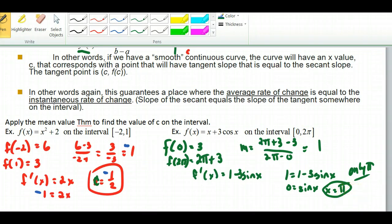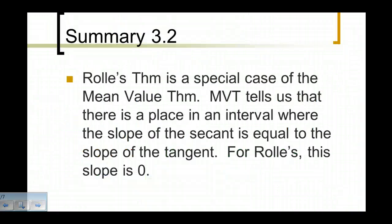To finalize: Rolle's Theorem is a special case of the Mean Value Theorem. The Mean Value Theorem tells us — as an existence theorem — that there is a place where the slope of the secant is equal to the slope of the tangent. For Rolle's, that slope is 0. Thank you very much, have a good day.